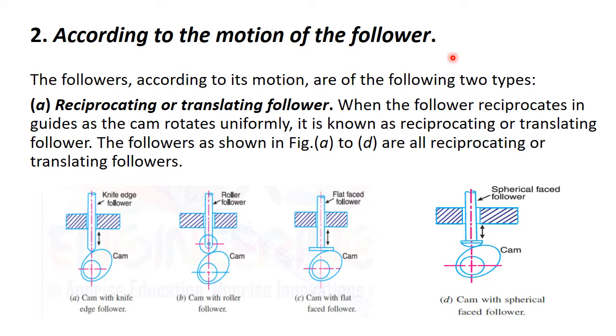Second, according to the motion of follower. According to the motion of follower, we have described the types of follower. The followers according to its motion are of the following two types. First one is reciprocating or translating follower. Second one is oscillating or rotary follower.